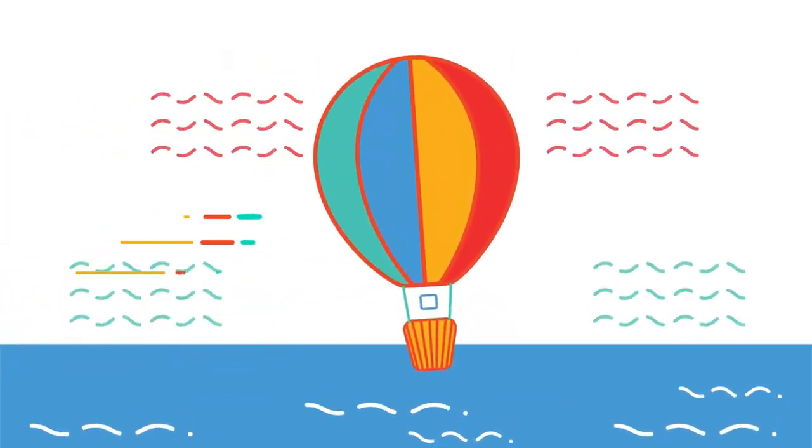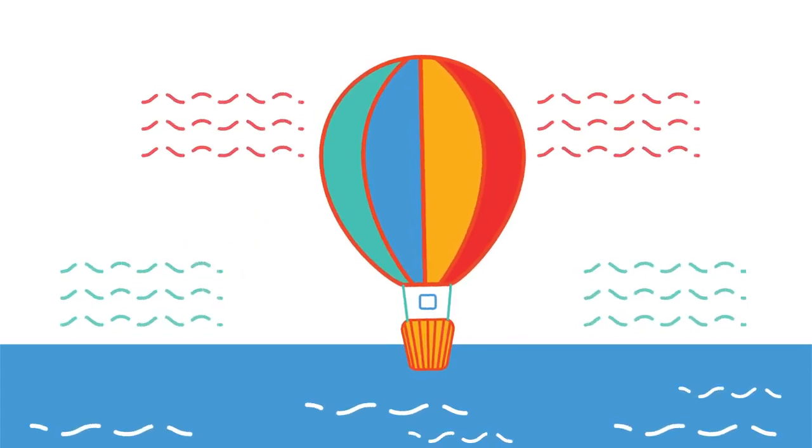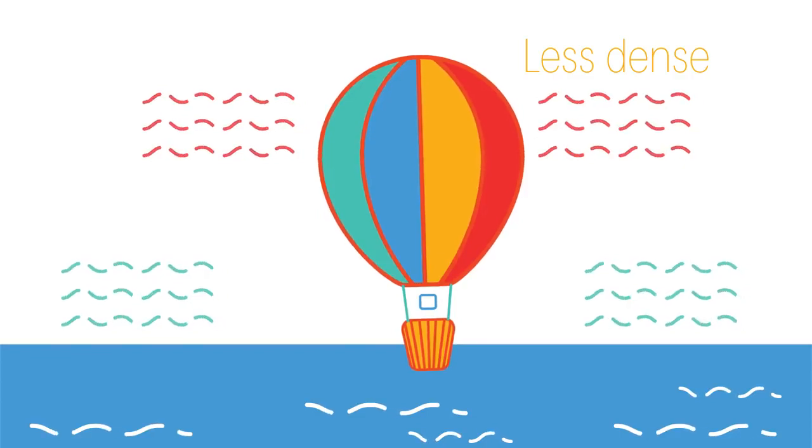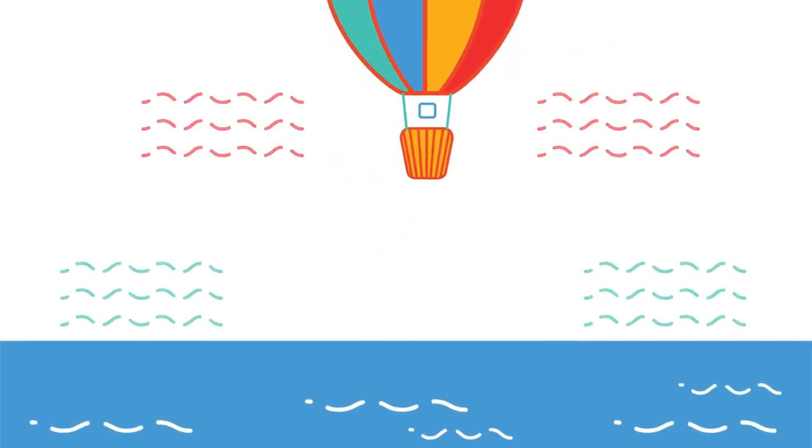This relationship between temperature and density explains how hot air balloons work. Hot air is less dense than normal air, which means hot air balloons rise. Hot water is also less dense than cold water, so the top of the ocean is warmer than the bottom.